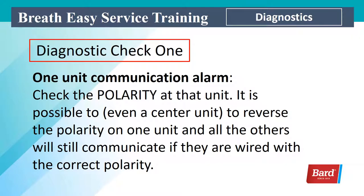If you have one single unit showing a communication alarm, check the polarity at that unit. It is possible, even if it's a center unit, to have reversed polarity on just one unit while all the others still communicate, provided they are wired with the correct polarity.